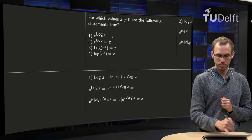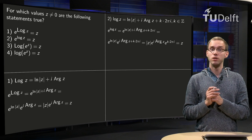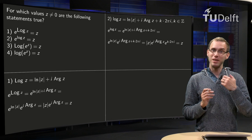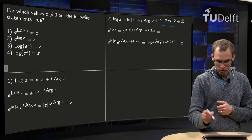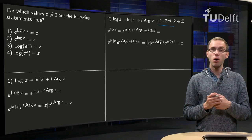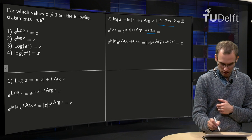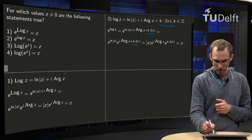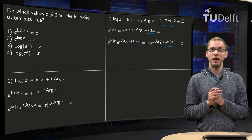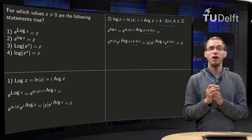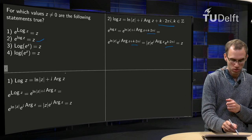Second statement: instead of the capital Log of z, we have the small log of z. The only difference is that the small log of z includes an additional factor of 2πk. In the computation, this factor of 2πk appears inside the exponent, but e to the power of k times 2π equals 1 for every integer k, so it doesn't change the result. Therefore e to the power of small log z is still equal to z. The second statement is true as well.